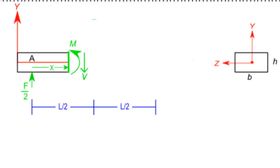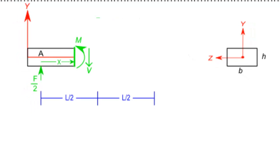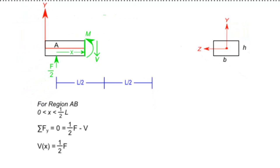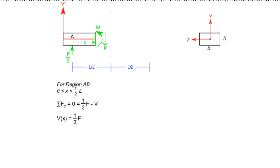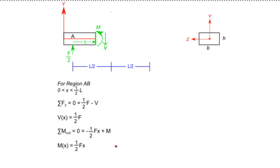Once we have identified the potential internal loads, we can use the equations of static equilibrium to determine their magnitudes and directions. In this case, we can see that in region AB there is a constant shear force of magnitude F over 2. Also, there is a moment that varies linearly from 0 at point A to 1 quarter FL at the center of the beam.